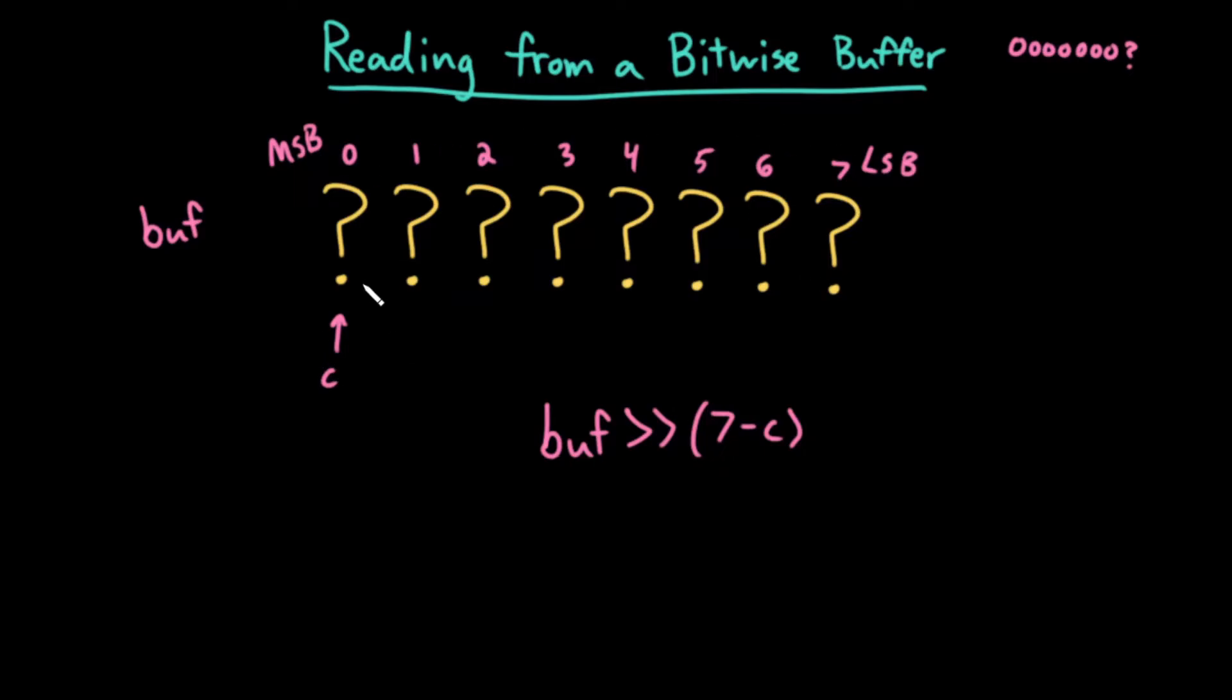In this scenario, I would shift it over seven minus c times. Then I could return that value, assuming this is a single byte. In C++, that would be an unsigned char. If I shift this over seven spaces and return it, I'm guaranteed to get either zero or one because all the leftmost slots would be filled with zeros.